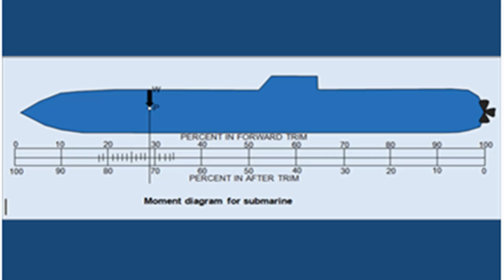If a weight W is added at some point P along the ship's length — for example, in the given illustration, if 1000 kg is added at point P — there will be no change in weight or in the longitudinal position of the center of gravity if 290 kg of water are blown from the forward trim tank and 710 kg are blown out from the after trim tank.